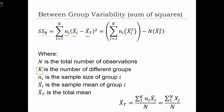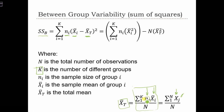The total mean can be thought of as the sum over all the x's divided by the total number of observations. But sometimes we don't have the actual observation values — we only have the group means and the group sample sizes. In that case, we can still calculate the total mean as a weighted mean, weighting the group means by the group sample sizes. We need the total mean in this equation to calculate the between-group sum of squares.